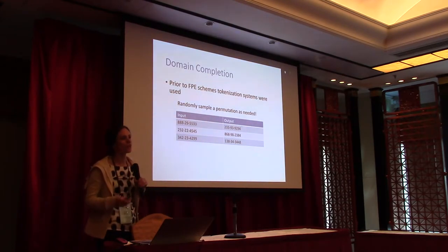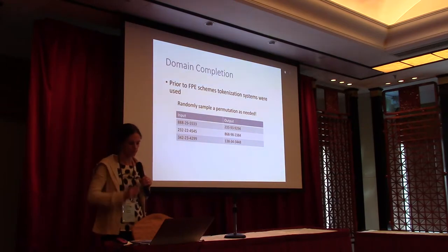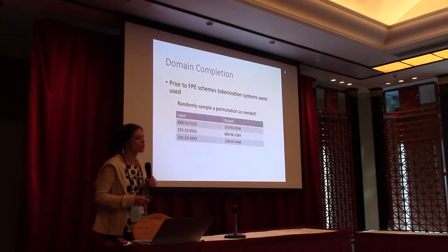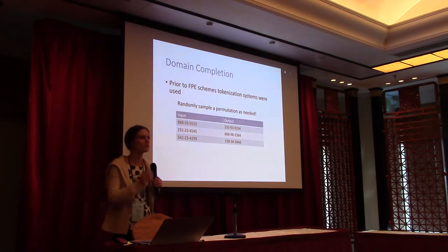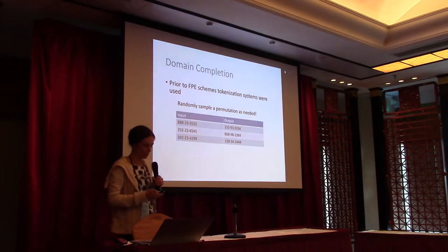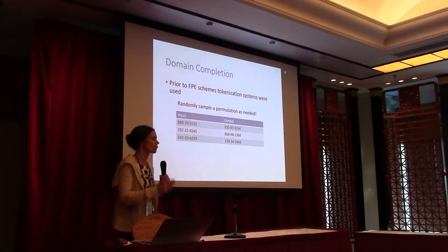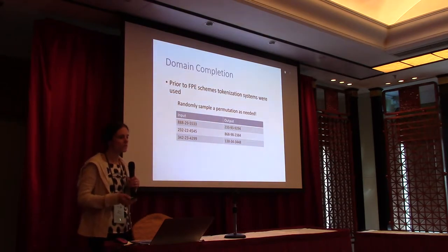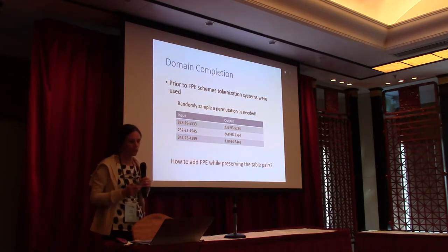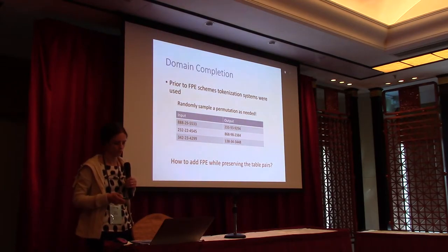The cycle slicer algorithm I'm going to talk about today also applies to a different problem related to format preserving encryption: the domain completion problem. Prior to format preserving encryption schemes, practitioners used tokenization systems — they would lazily sample a random permutation, keep these pairs in a table, and add to this table as needed. Later, when an efficient format preserving encryption scheme becomes available for their application, they want to start using it, but they can't just ignore these tables — they've already handed out keys and need to preserve the existing pairs.